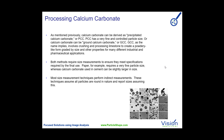We can understand that different uses are going to require different particle sizes, so the calcium carbonate must be processed. There is precipitated calcium carbonate and ground calcium carbonate. The different applications will require one versus the other and will also require different particle sizes. The application for paper, for example, requires a very fine particle size — somewhere in the two to three micron range — while in the building industry, it's much higher than that.